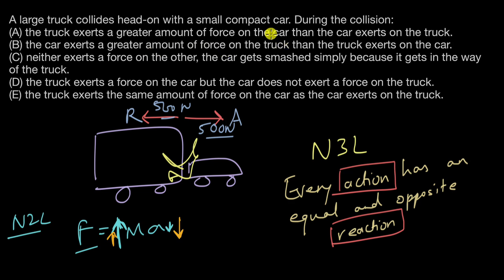C says neither exerts a force on the other; the car gets smashed simply because it gets in the way of the truck. There is a force acting whenever there are two objects interacting. D says the truck exerts a force on the car, but the car does not exert a force on the truck. That is again false.